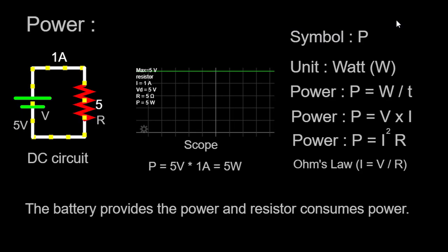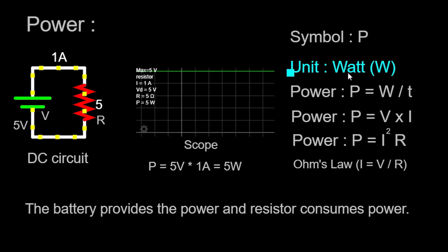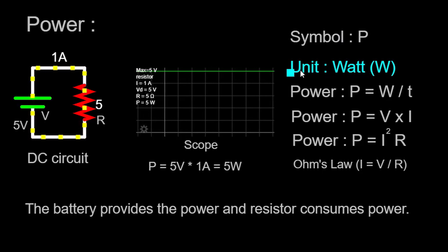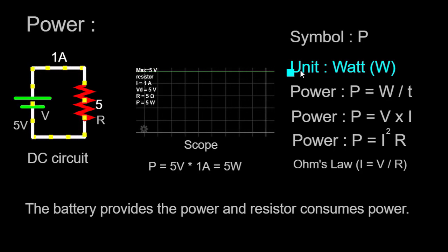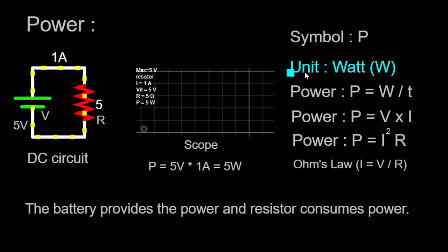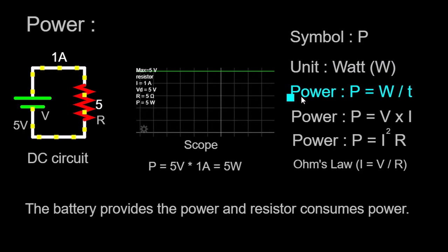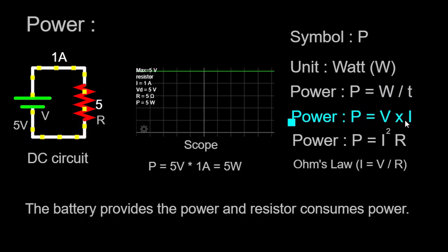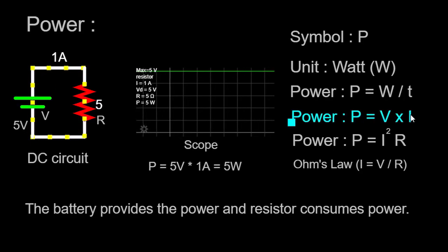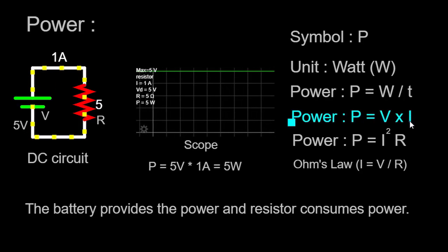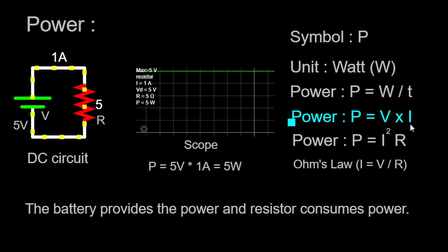Now, let's move on to power. Power, measured in watts (W), is a fundamental concept in electrical engineering. It quantifies the rate at which electrical energy is converted or dissipated in a circuit. In other words, power tells us how quickly work is being done or how rapidly energy is being transferred. To calculate the power in a circuit, we use the formula P = VI, where P represents power, V represents voltage, and I represents current. In our setup, the current flowing through the circuit can be determined using Ohm's law: I = V/R.